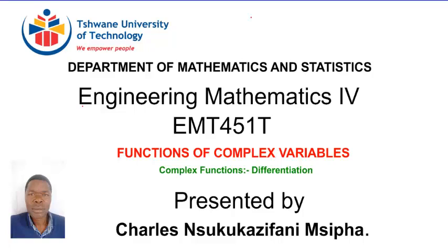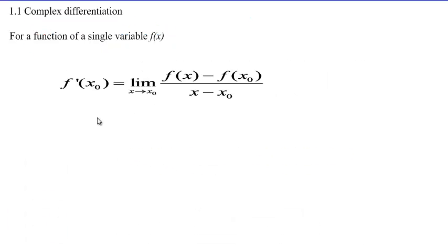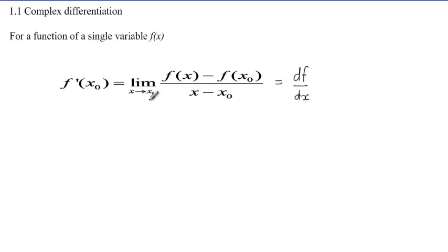Just to recap on differentiation of functions of a single variable: we recall that the derivative of a function of a single variable was defined by a limit of this nature. If the limit of this incremental quotient existed, that is what we call the derivative, or f-prime of x, which you could also denote as df/dx — where we differentiate the function with respect to its independent variable. This limit was calculated as x tending to x-naught.